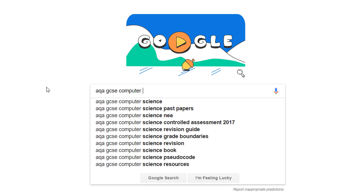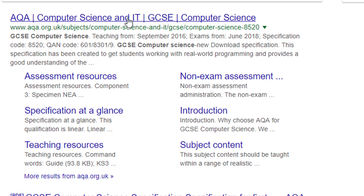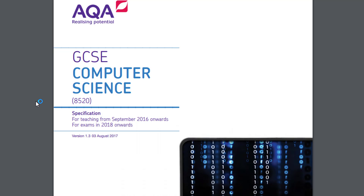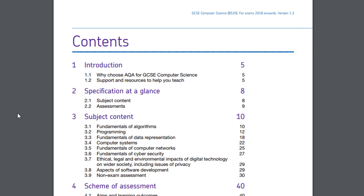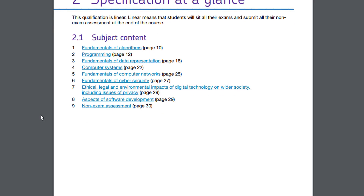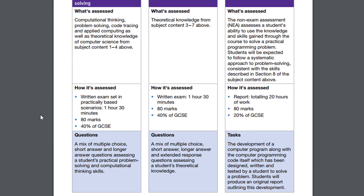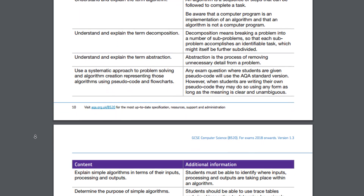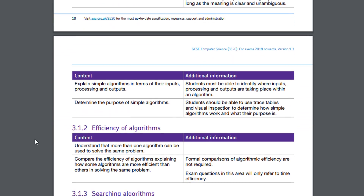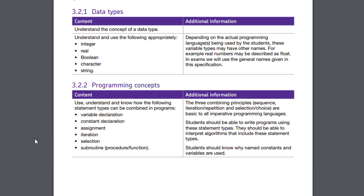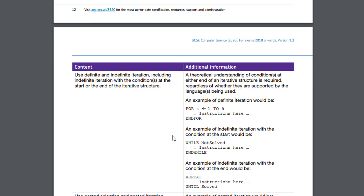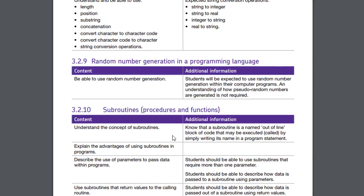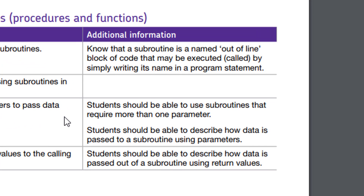My main piece of advice for studying would be to make use of the course specification. This is a document published on the exam board's website and it basically outlines everything to do with the course. A lot of it is for teachers — administrative stuff about moderation and so on — but a lot of it is really useful for students too. Most students don't use it; in fact some teachers don't use it. Part of the specification is the subject content, which outlines all the bullet points of content the exam board want you to know. Making the videos I followed the specification directly, so I haven't left anything out or included stuff which isn't necessary for your exam. AQA are especially good at this — they have a second column where they explain stuff, define things, and give formulas.